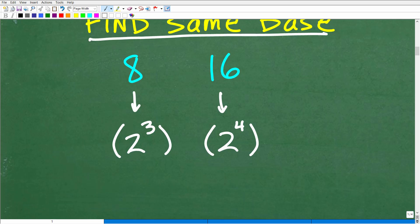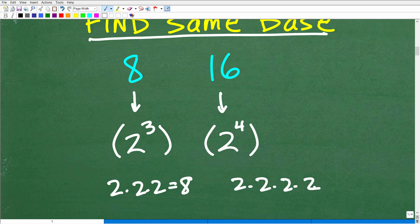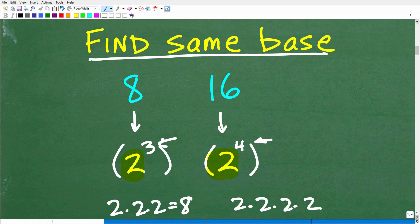All right, so here we can think of 8 as 2 cubed. Okay, because 8 is equal to 2 cubed, 2 times 2 times 2 is 8. So if we express 8 as 2 cubed, well, that's going to help us out because we can express 16 as 2 times 2 times 2 times 2 or 2 to the fourth. Now we have these two numbers, 8 and 16, expressed in such a way where they have the same base. Now, of course, they have different exponents, but again, what we're focusing in first is to see if we can get the bases the same.